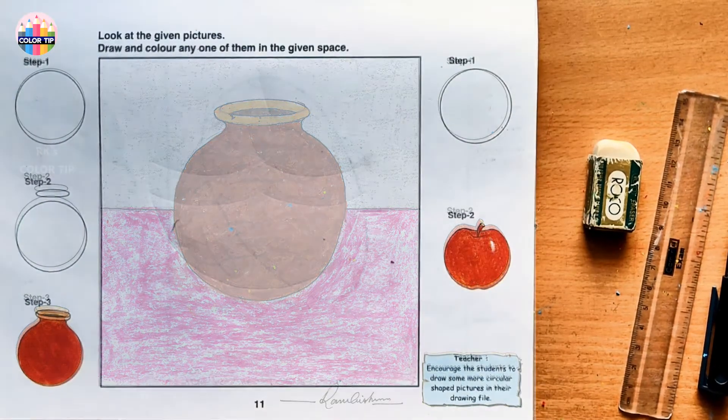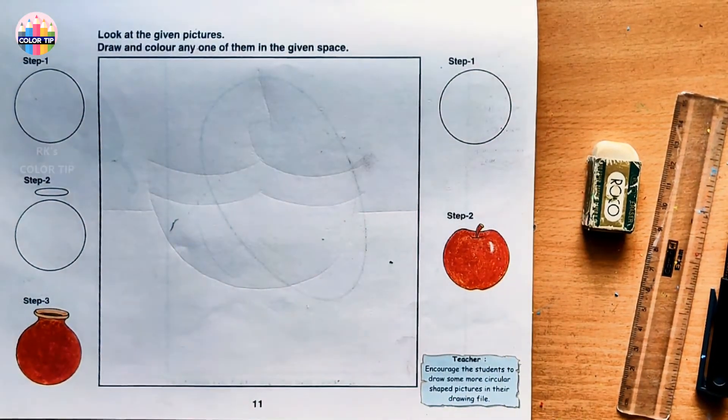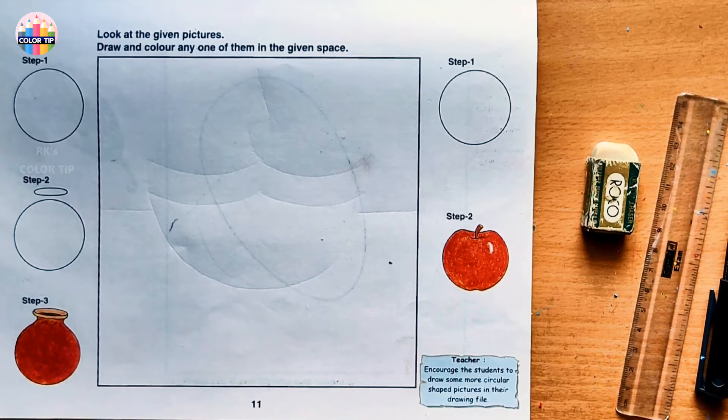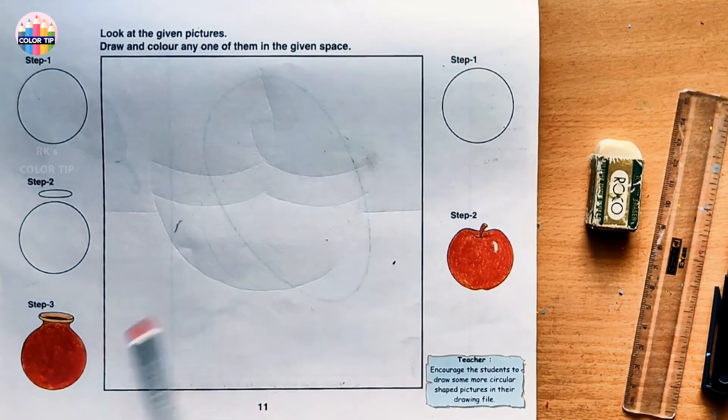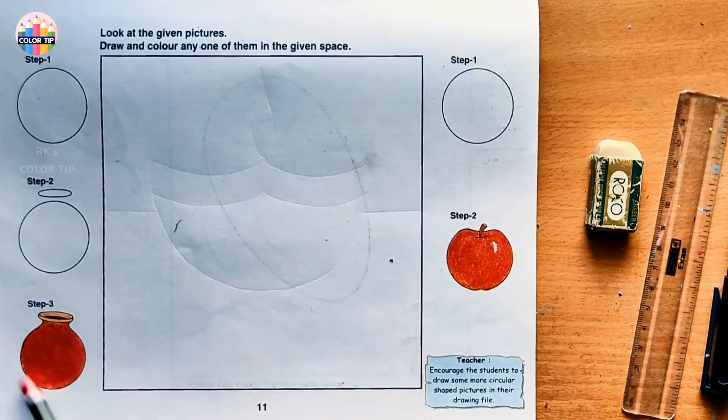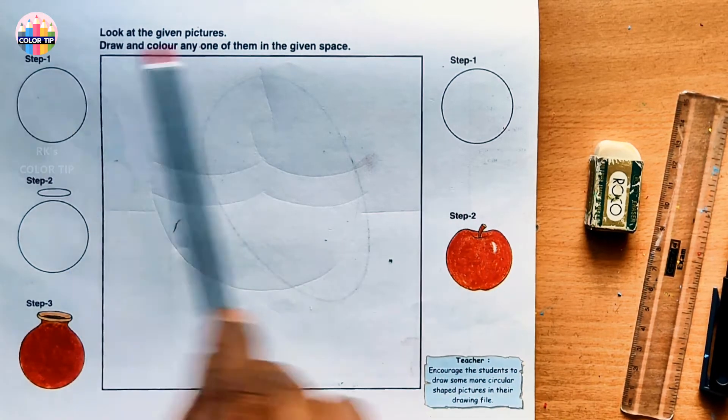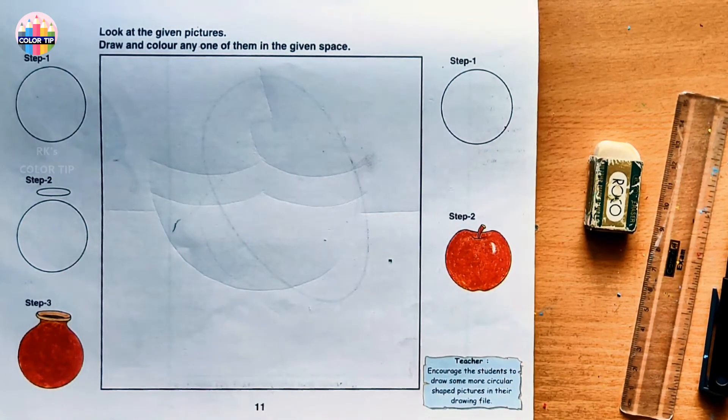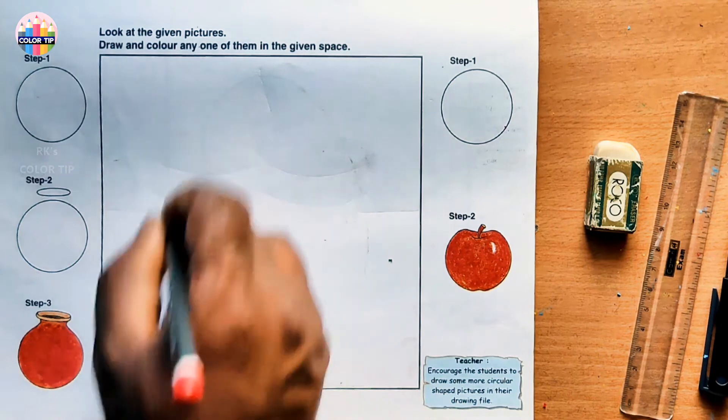Step by step class 1 page number 11. Look at the given pictures, draw and color any one of these two. The basic shape of these two objects is a circle. Let's draw a circle as big as possible.